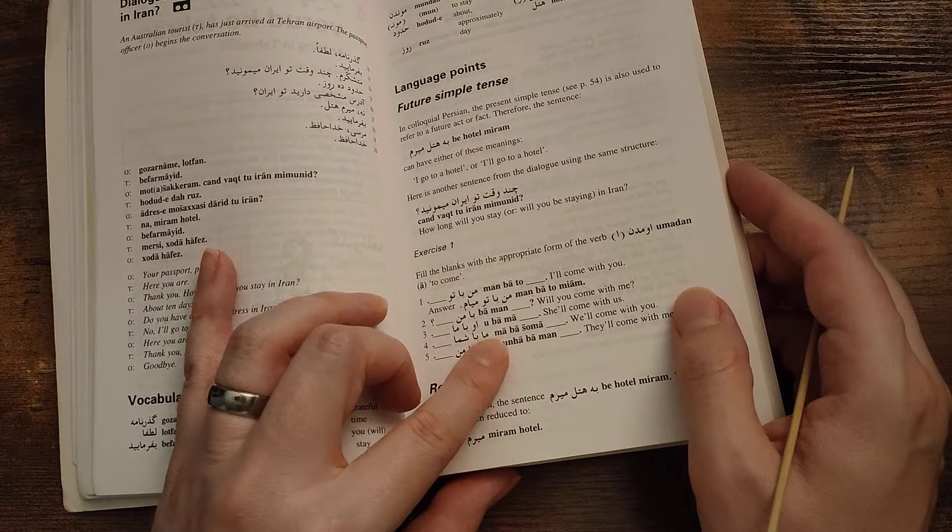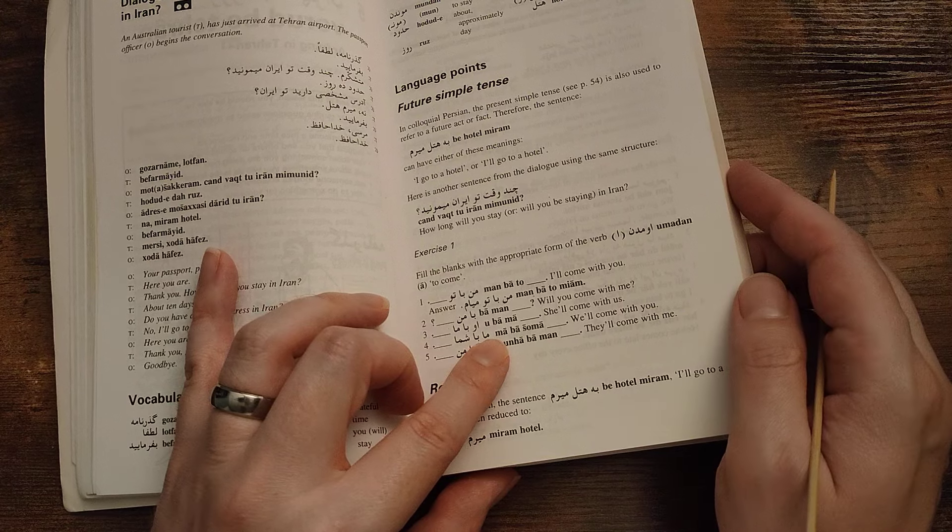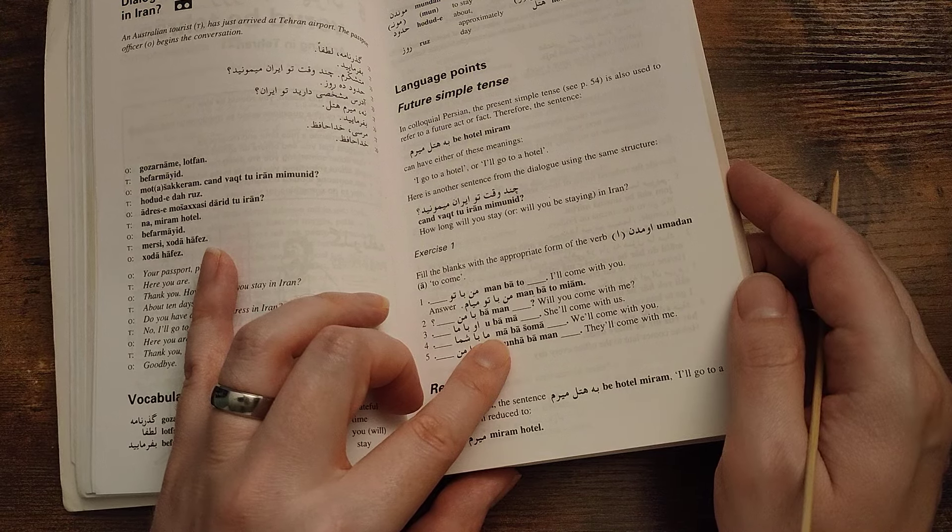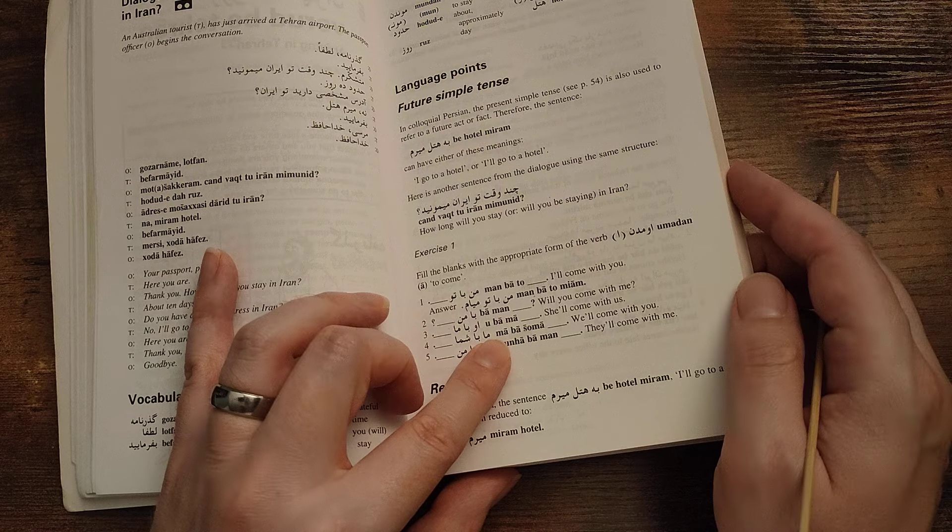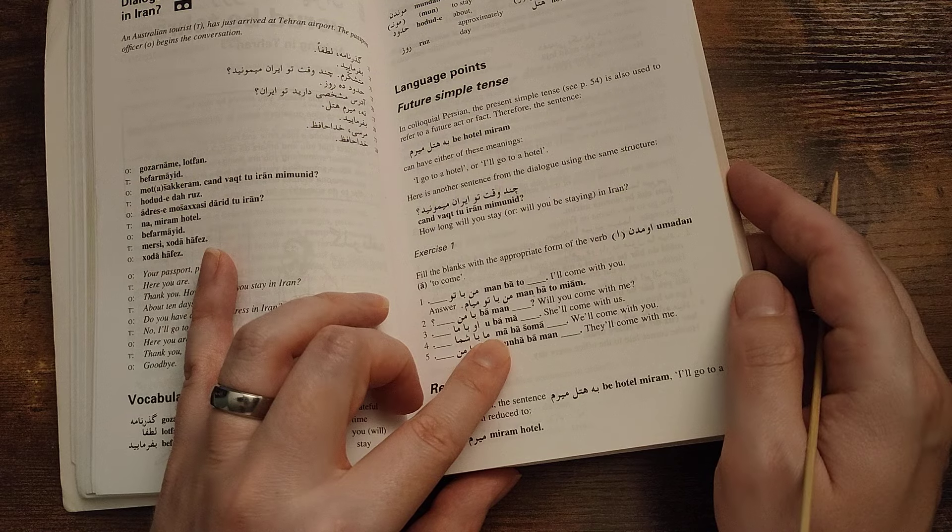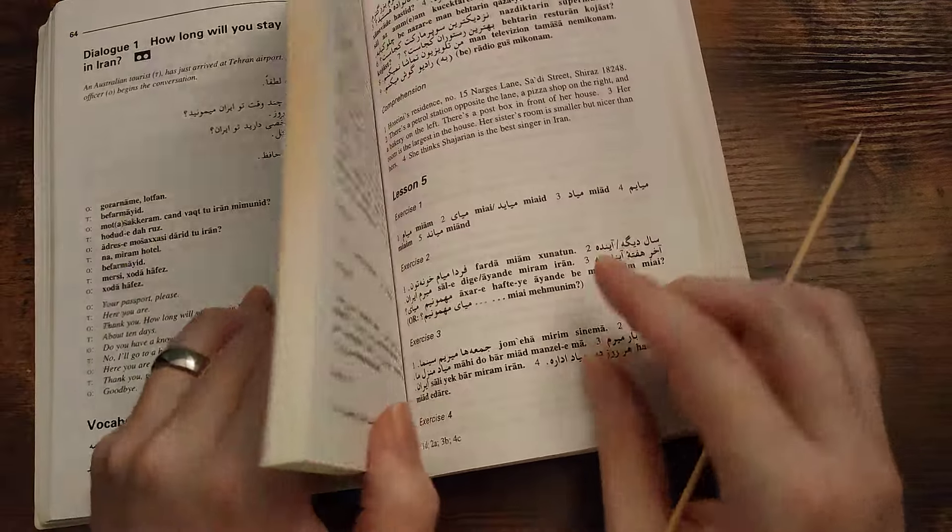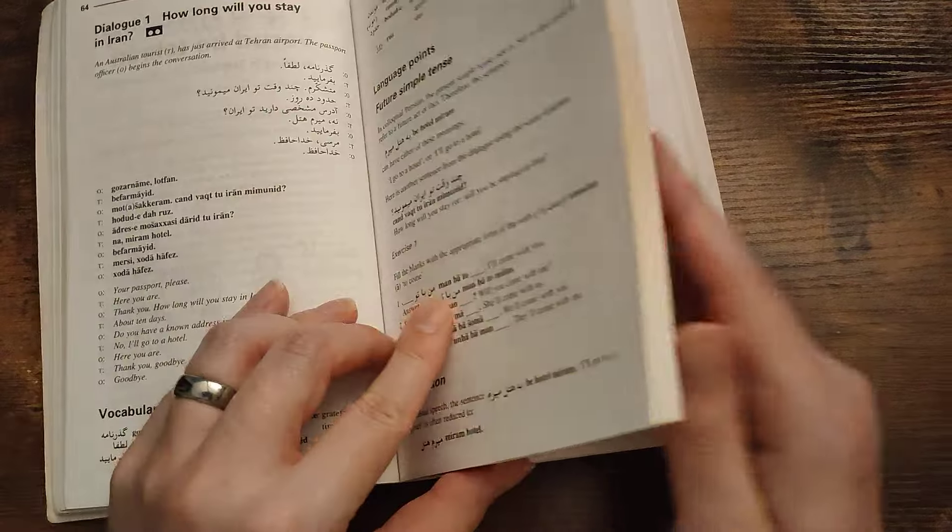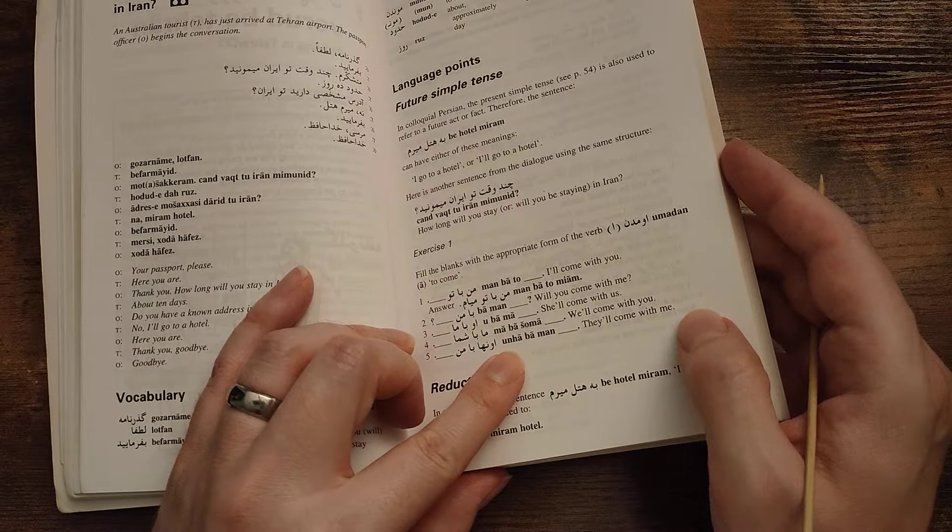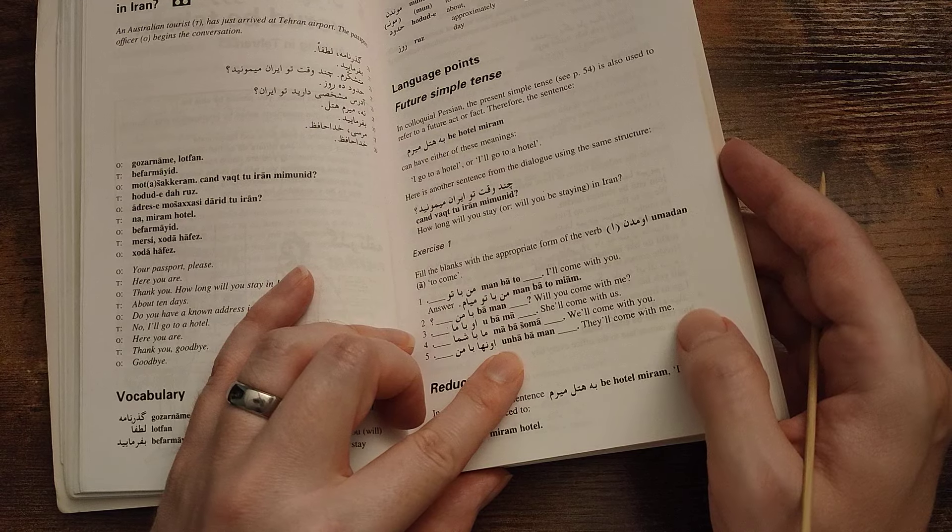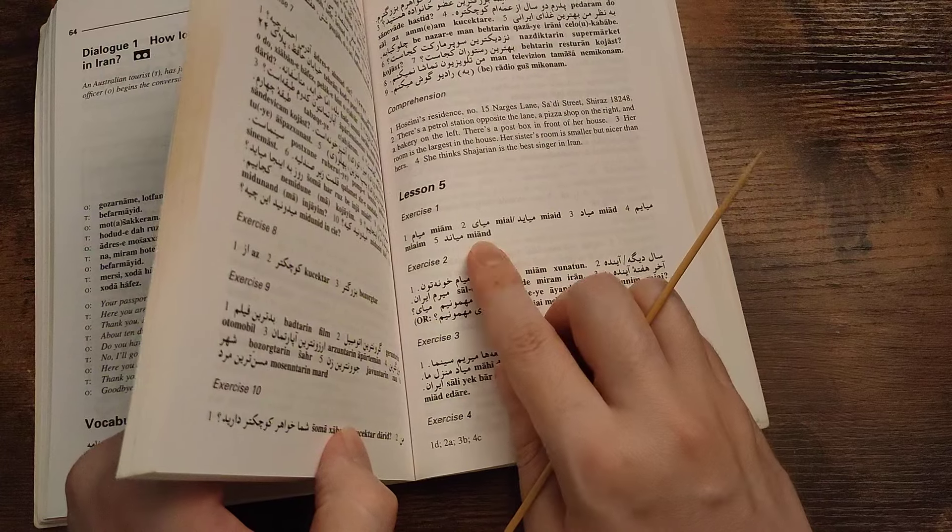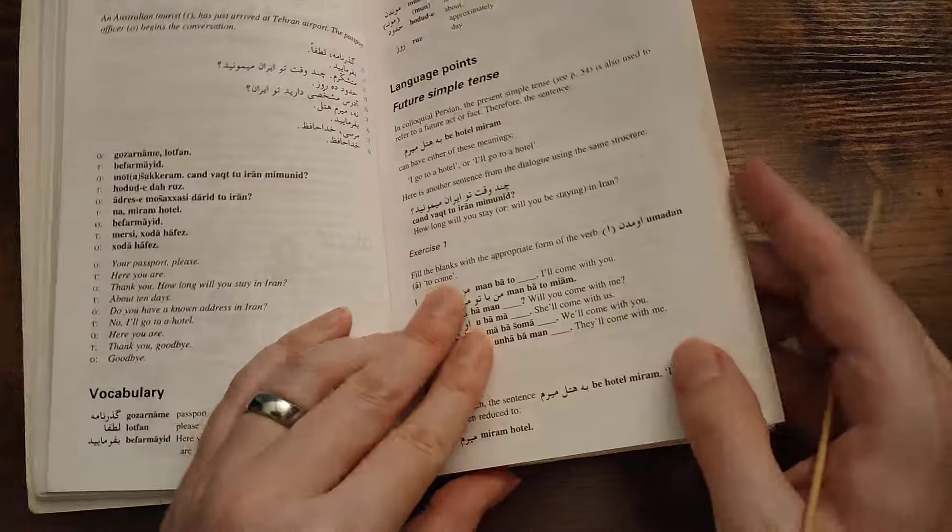Ma basho ma miyaim. Unha ba man miyand. That might be miyand. Miyand. Okay, got there in the end.